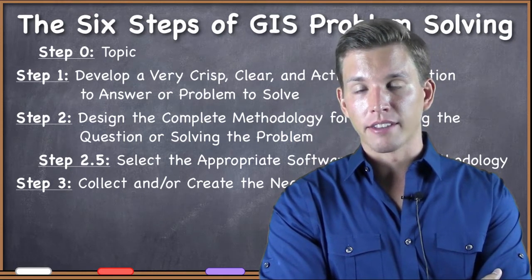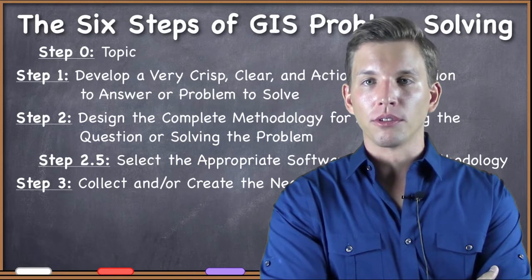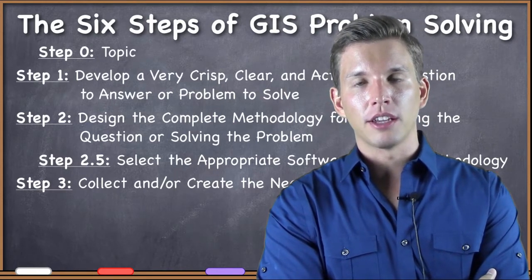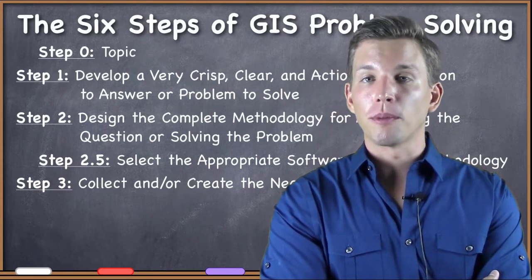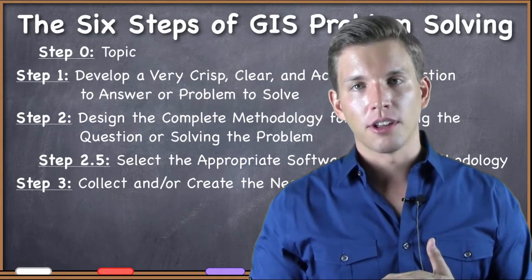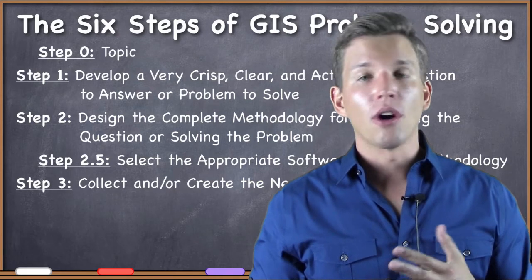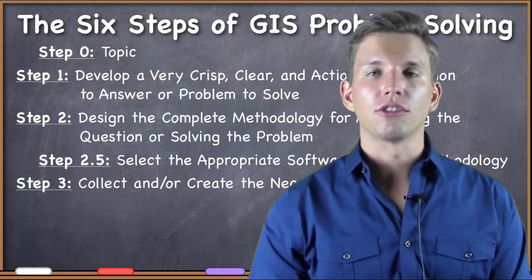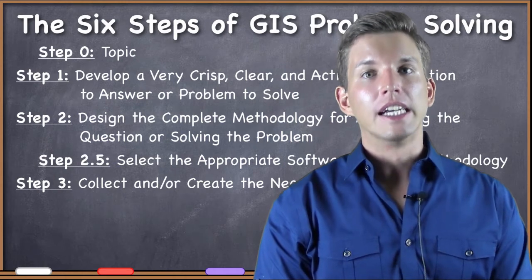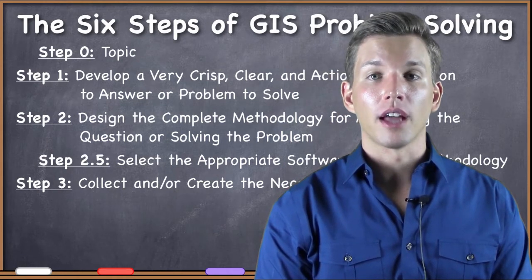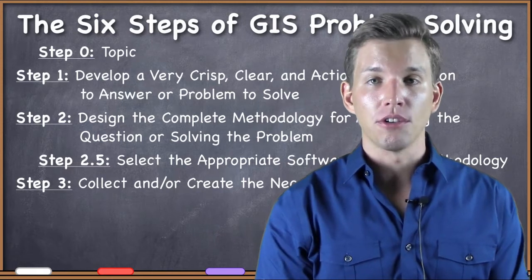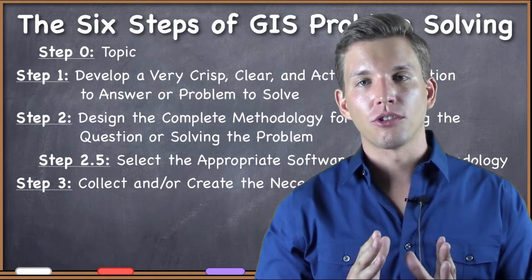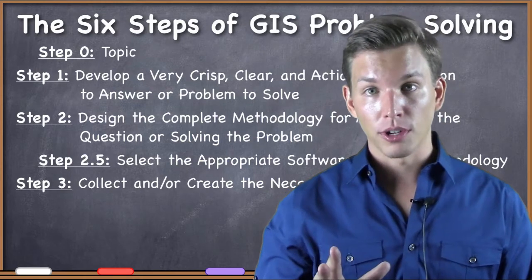But even if you think, oh, I just need some roads for this particular city that I'm trying to do a GIS project about, you might be able to go to the city's GIS page and download some shape files about the roads. But you don't know who digitized them. You don't know that it's got adequate metadata. You don't know the digitizing was done well. You don't know if it has the attribute information that you need. You really are going to have to do a lot of quality control to make sure that you actually do have the data that is necessary to go through the methodology that you designed.